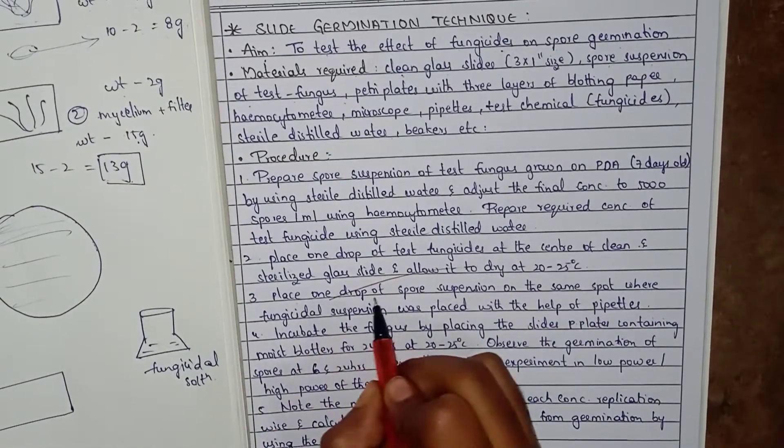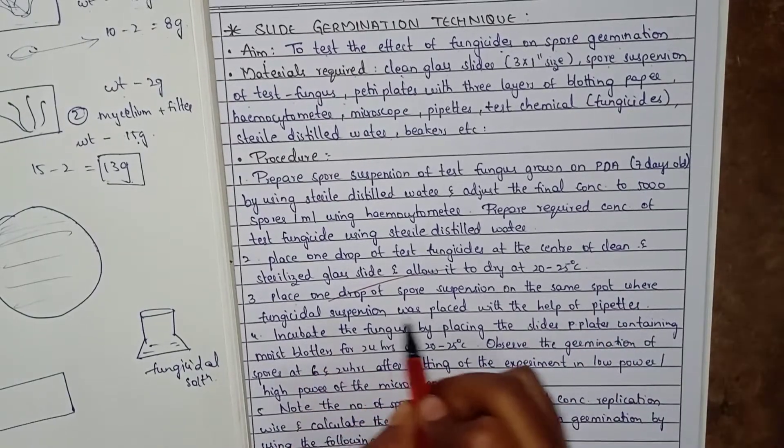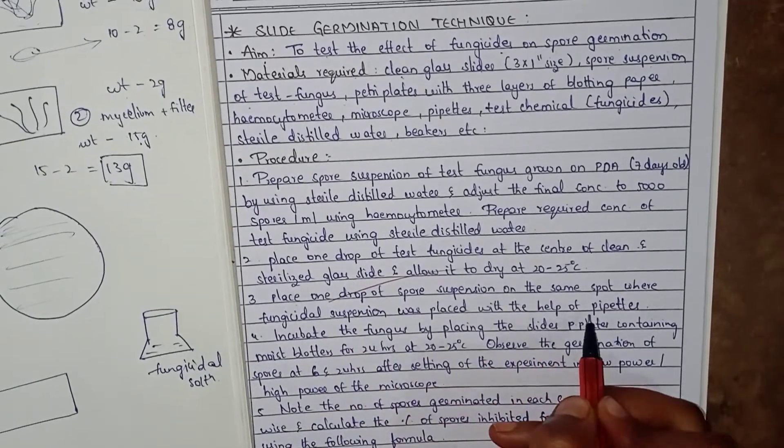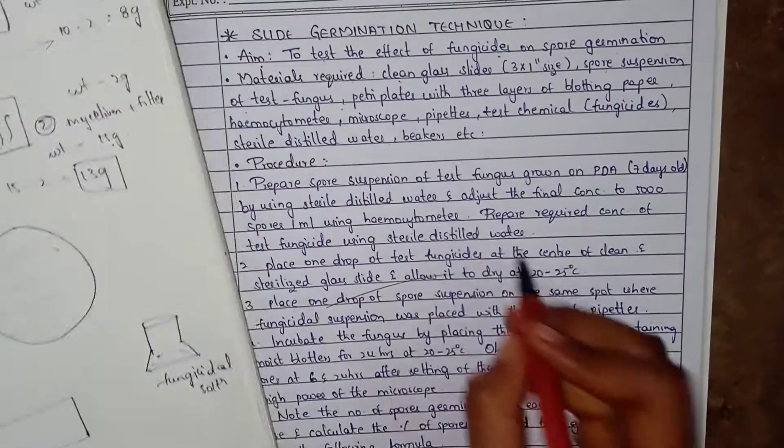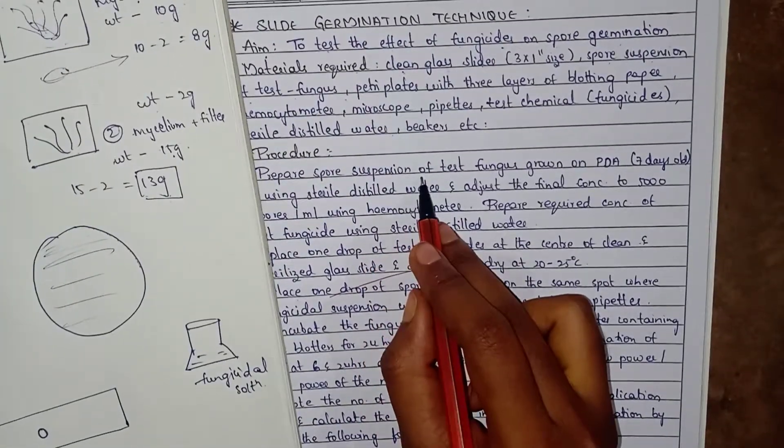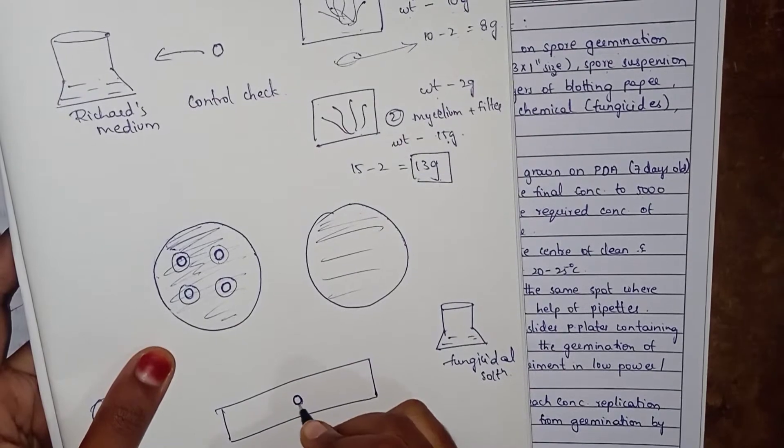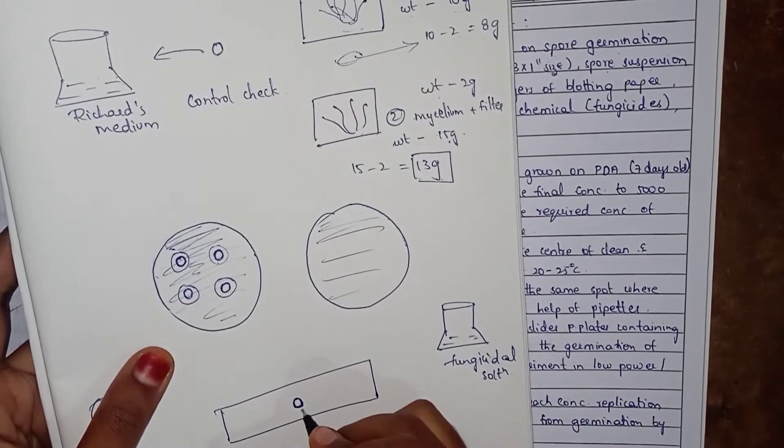Place a drop of spore suspension on the same spot where fungicide suspension was placed with the help of pipettes.